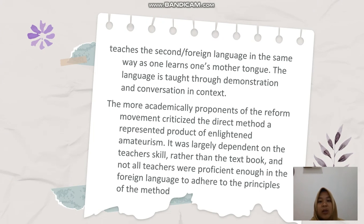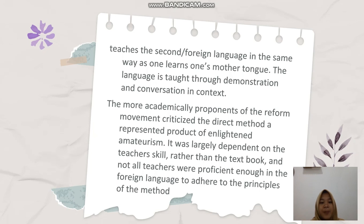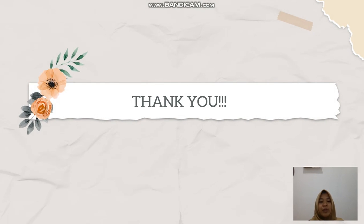The second or foreign language is taught in the same way as one learns one's mother tongue — the language is taught through demonstration and conversation in context. Among the criticisms from the reform movement: the direct method represented products of English teachers' amateurism. It was largely dependent on the teacher's skills rather than textbooks, and not all teachers were proficient enough in the foreign language to adhere to its principles. Thank you for watching my video. Assalamualaikum warahmatullahi wabarakatuh.